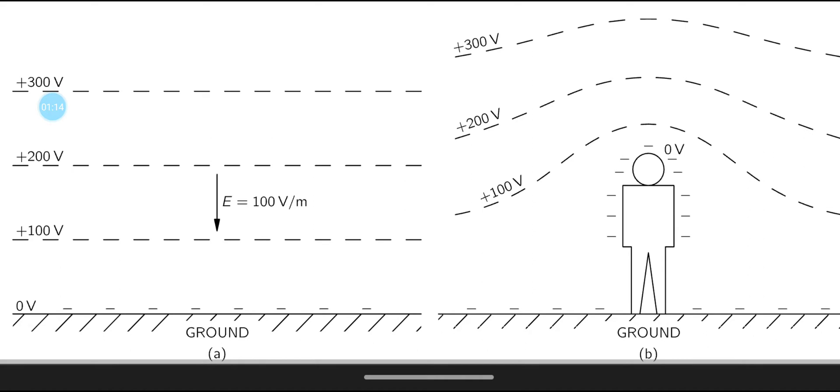Now of course this varies a lot, but the notion is the ground is relatively negative, and the upper atmosphere, as we go up in the meters above the ground, is going more positive. And so you can imagine the electric field lines, from the negative to positive, would be roughly vertical.